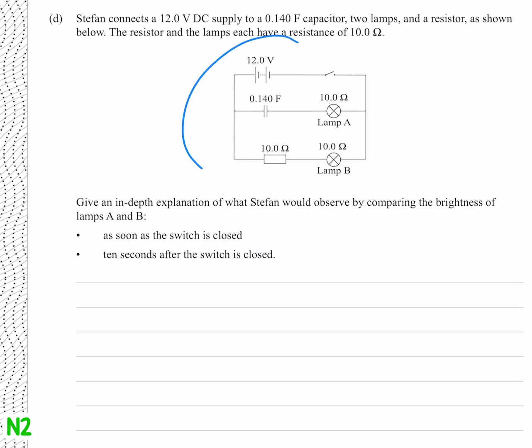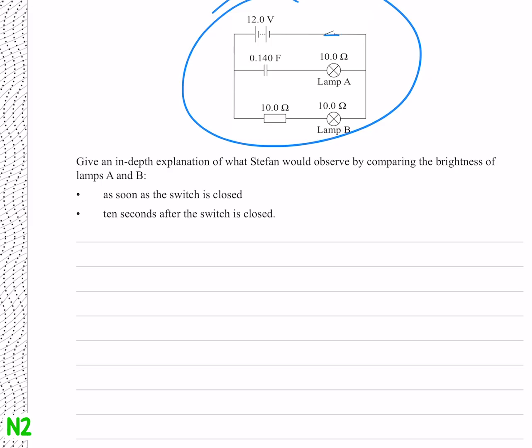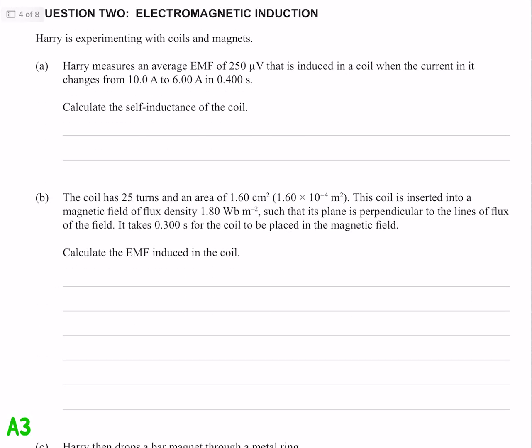Looks like we've got a new circuit here. Give an in-depth explanation, I think not, of what Stefan would observe by comparing the brightness of lamps A and B. Well when the switch is closed, we're going to have some complicated behavior here with the capacitor and the lamp, so let's just pretend that it doesn't exist, which means we just have a voltage source, a resistor and a lamp. And so lamp B is going to stay lit, because why wouldn't it?